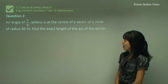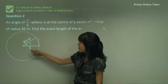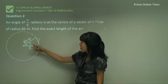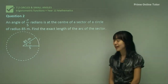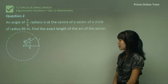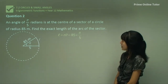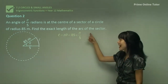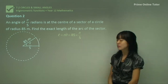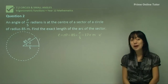Moving on, question 2. They've given us an angle of π/5, a radius of 85 metres, and we have to figure out what L is — the length of the arc. Using L equals R theta and substituting, keep in mind the question says find the exact length of the arc, so we're going to leave it in terms of pi. Simplify and you get 17π metres.